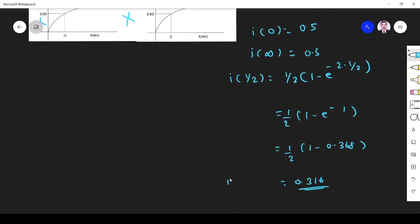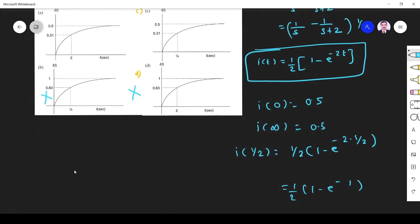So when t equals 1/2, it is 0.31. So option C is the right answer. So option A is also right answer. Thank you.